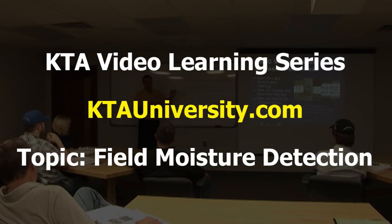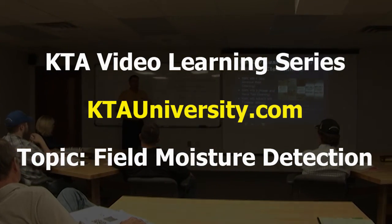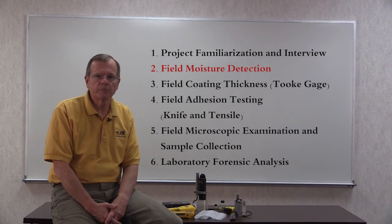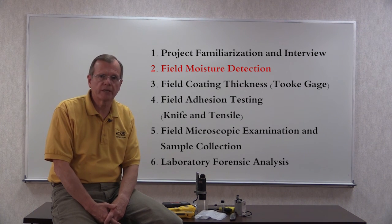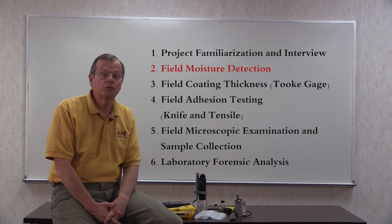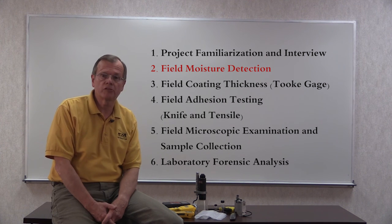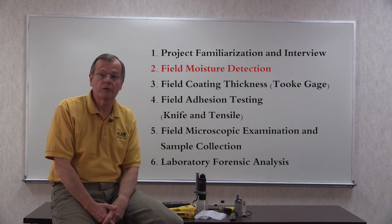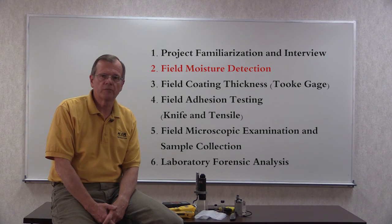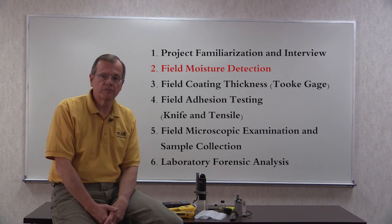Welcome to the KTA Coating Failure Analysis Training Series. This is part two of a six-part series that describes the field and laboratory techniques used to determine why there was an intercoat delamination problem with a coating applied to a concrete floor. Each part is stand-alone, but when viewed in order, they present the key findings from an actual project. This video addresses part two.